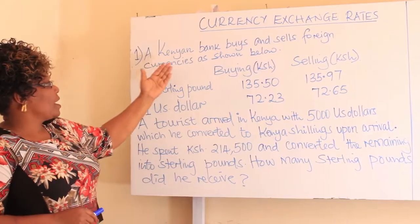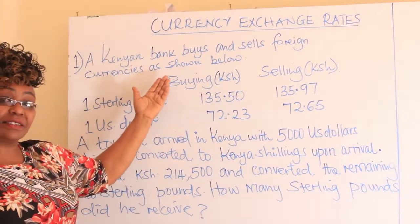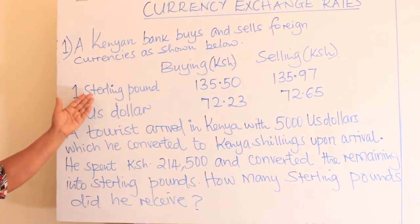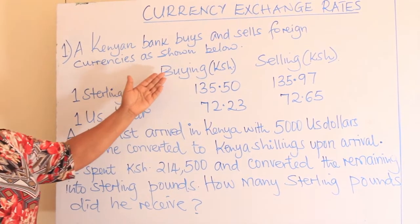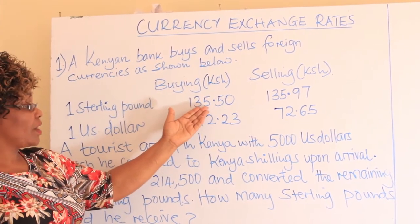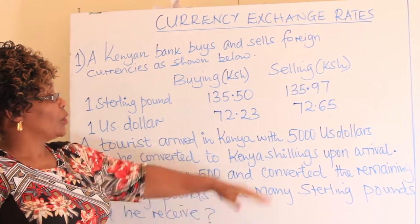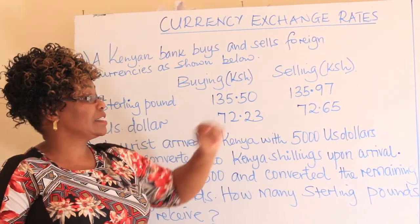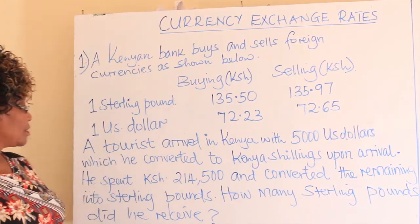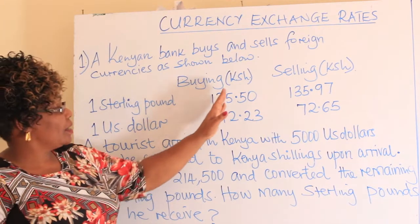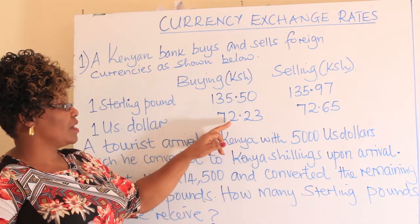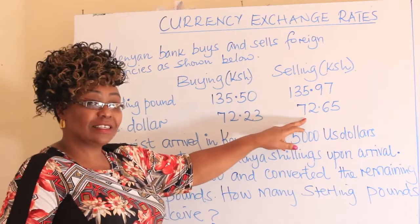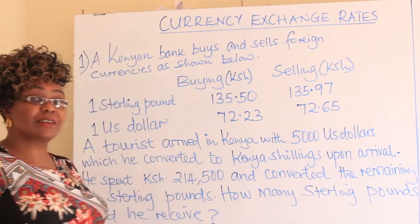A Kenyan bank buys and sells foreign currencies as shown in this table. One sterling pound — buying in Kenya shillings: 135.50, selling in Kenya shillings: 135.97. One US dollar — buying in Kenya shillings: 72.23, selling in Kenya shillings: 72.65.